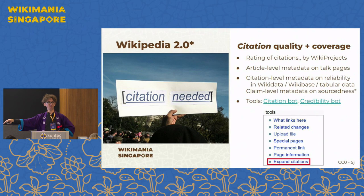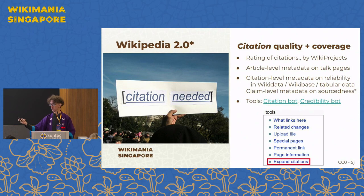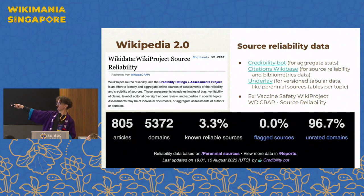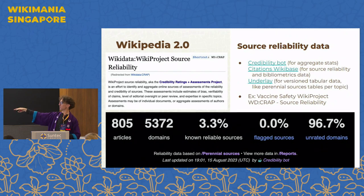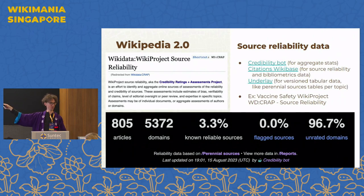So we should make more hay about that and invite people to build tools like this. We already have CitationBot, which helps people clean up citations and make them beautiful. James Hare worked on a credibility bot that goes through all of the sources used as references in articles in a category, which would be very useful to wiki projects. We tried this with the vaccines wiki project and it shows you a dashboard — how many articles were included, how many domains there were, how many of them are known to be reliable.